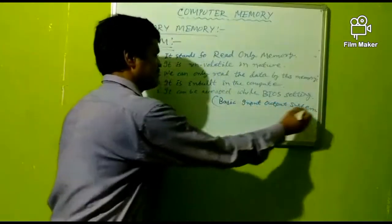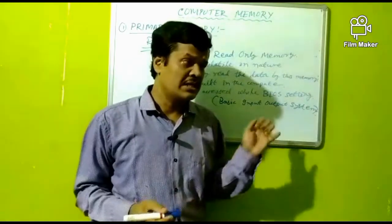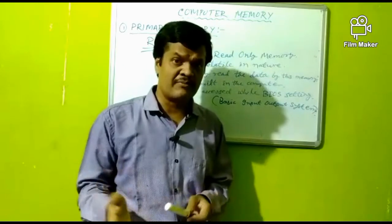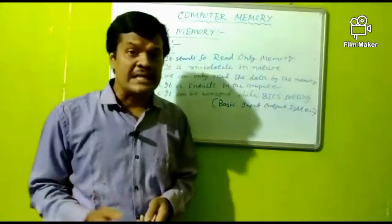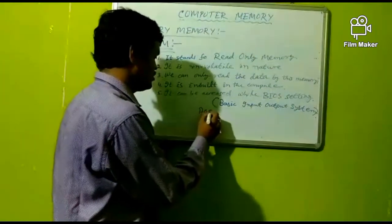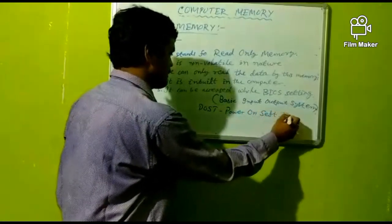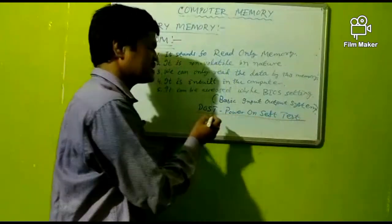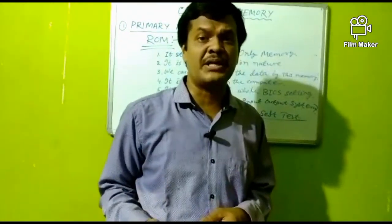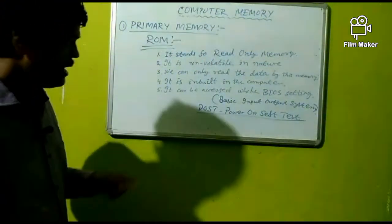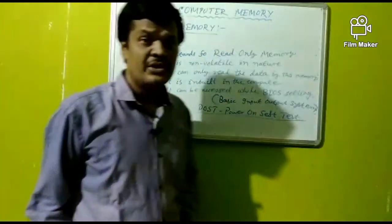Basic Input Output System — that is the full form of BIOS. In the BIOS settings, all the input-output systems are loaded. For example, if during power-up the keyboard is not connected, it will show a keyboard error. POST stands for Power On Self Test — it is the system check done during booting. Booting is the starting process of the computer.